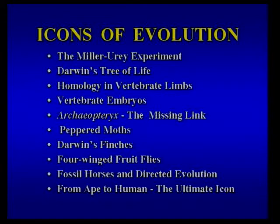The first icon I discuss is the Miller-Urey experiment about the origin of life. Then Darwin's tree of life — the branching tree pattern that supposedly describes how life has evolved on our planet. Homology in vertebrate limbs — the similarity in bone structures between our hand, a whale's flipper, and a bird's wing. Vertebrate embryos — pictures showing that we look very much like fish as early embryos, supposedly pointing to our common ancestry with fish. And Archaeopteryx, perhaps one of the most famous fossils in the world — an ancient bird with feathers, but with a reptilian mouth with teeth and a reptilian tail, long thought to be the link between reptiles and birds.